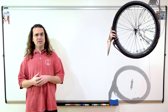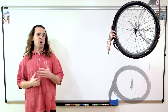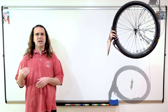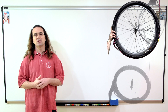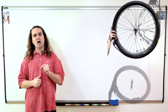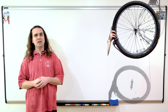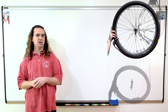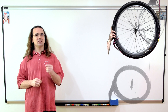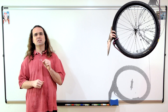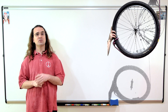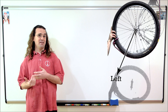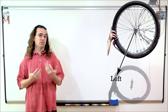Good morning. I have wrapped a rope around a bicycle wheel. When I let go of the wheel, the rope will unwind from the wheel as the wheel descends. While the wheel descends, does the center of the wheel move straight down, toward the left, or toward the right?